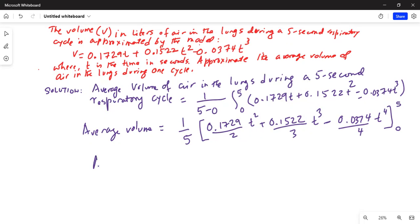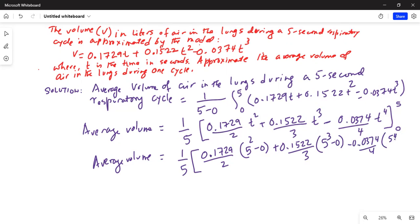Or this is equal to average volume is equal to one fifth. 0.1729 divided by two, t squared is 5 squared minus 0 plus 0.1522 divided by 3, 5 cubed minus 0, minus 0.0374 by 4, 5 to the power of 4 minus 0. Okay, where we substituted the limits, the lower limit is 0, upper limit is 5. So, let's do the calculation using a calculator.